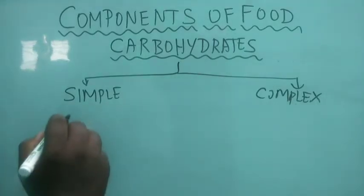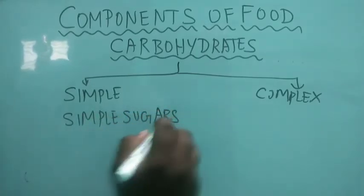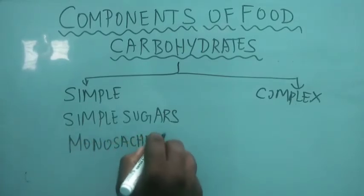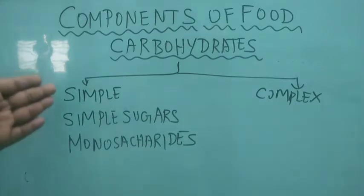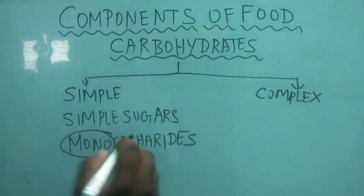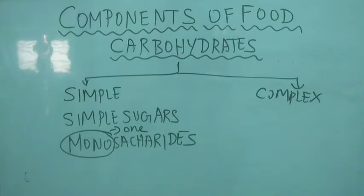Simple carbohydrate is made up of simple sugars — technically called monosaccharides. Mono means one, so it is made up of only one sugar unit. Hence it is called a simple sugar.